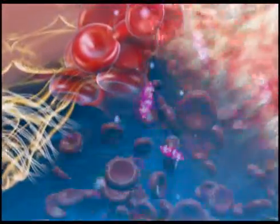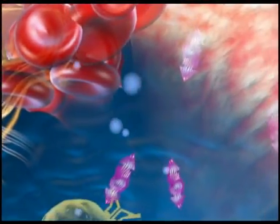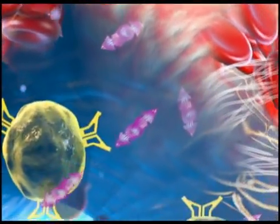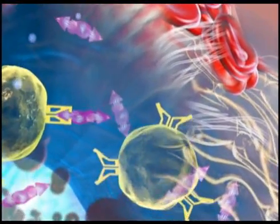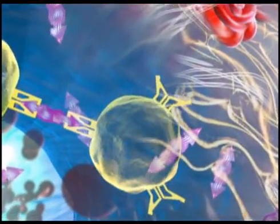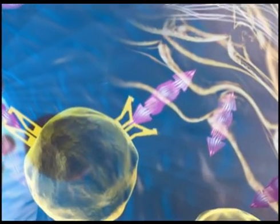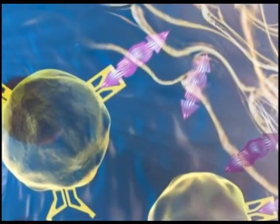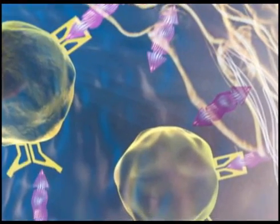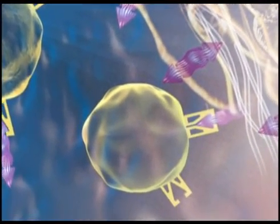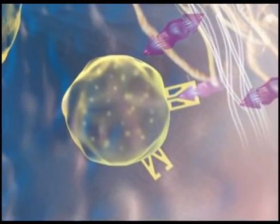The exposed ECM releases von Willebrand factor. This attracts platelets to the damaged area and promotes adhesion between these platelets. It forms bridges between platelets and the underlying extracellular matrix. Von Willebrand factor is also found on the surface of epithelial cells and in platelets as alpha granules.